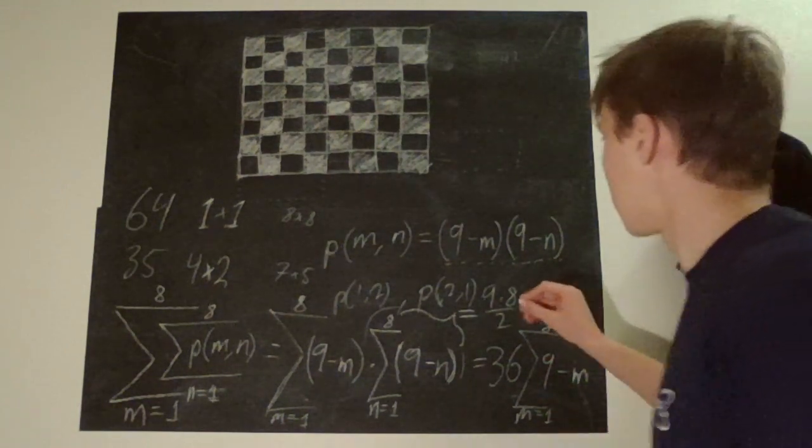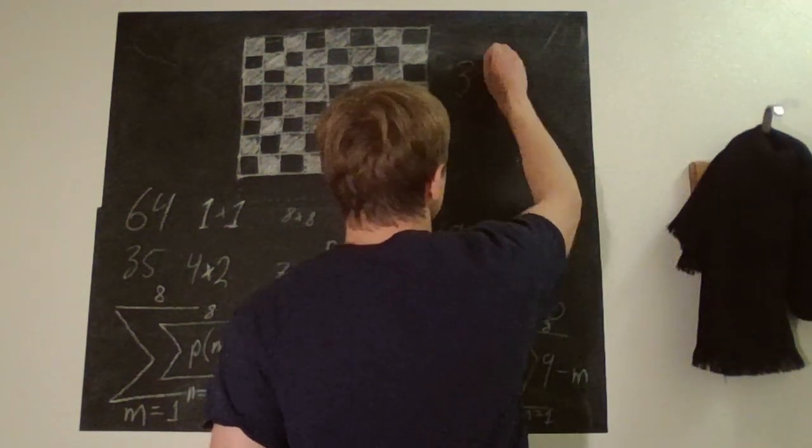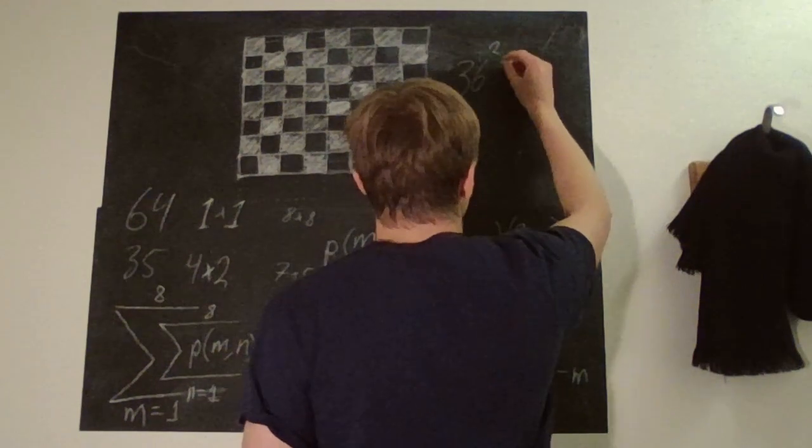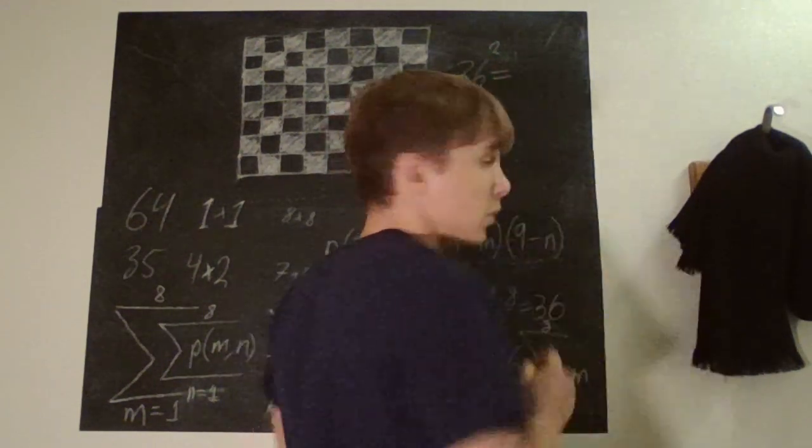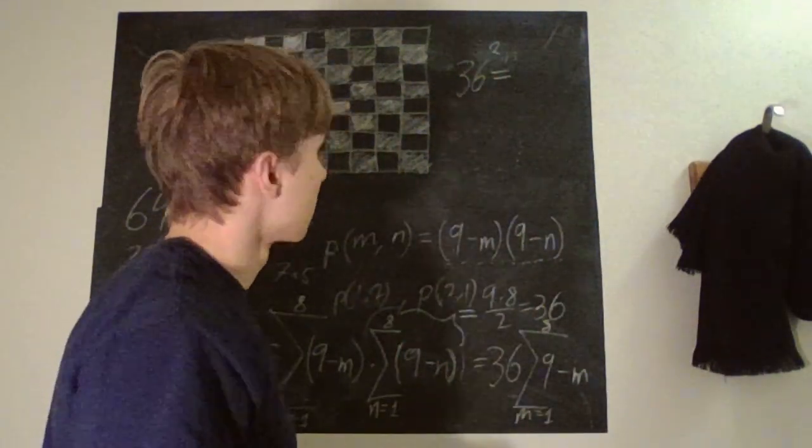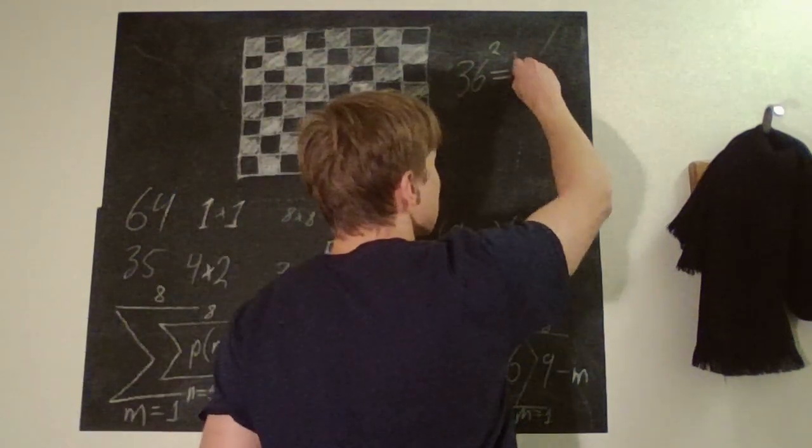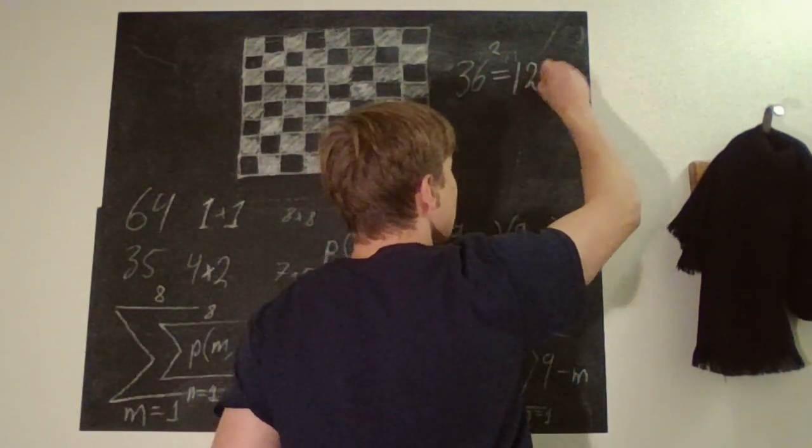So our answer is 36 squared, which is equal to 1296.